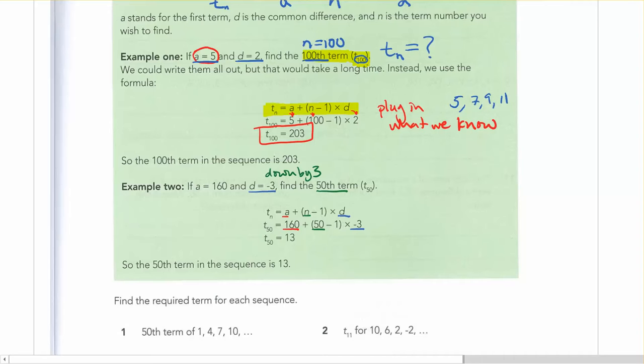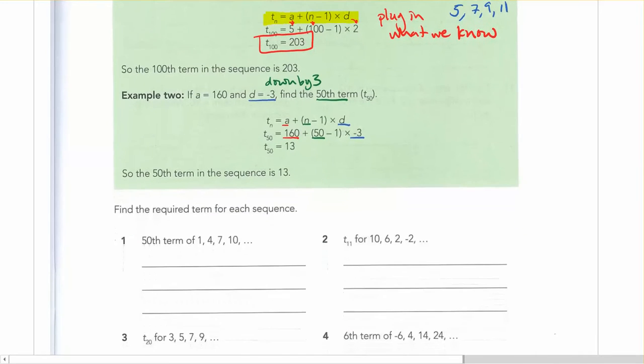So in these problems, we're going to ask you to figure out what the value of a specific term is. So the things that you need to identify, make sure you identify them. a is equal to, d is equal to, and n is equal to. And then find your t, because that's what you're looking for.